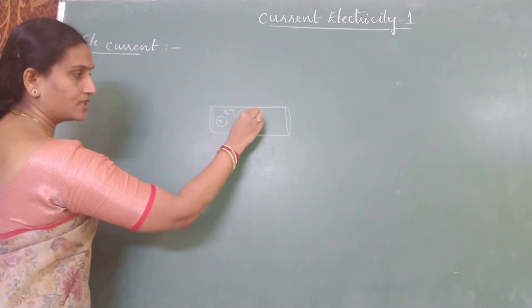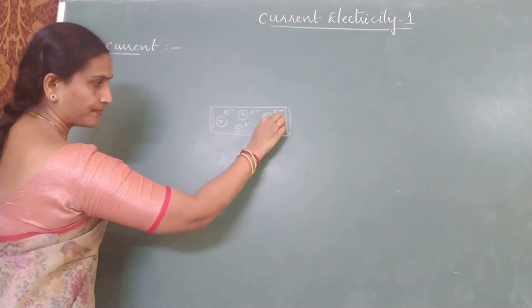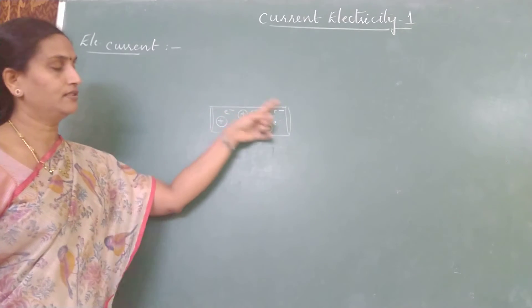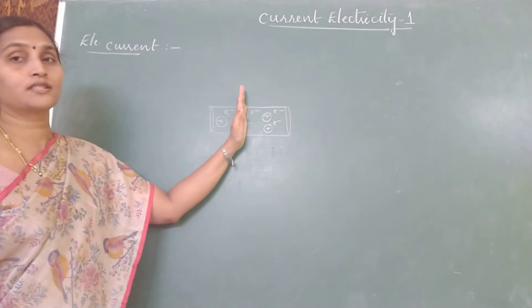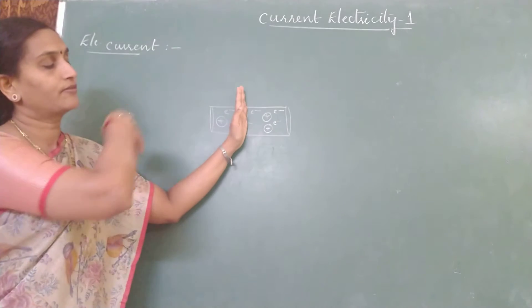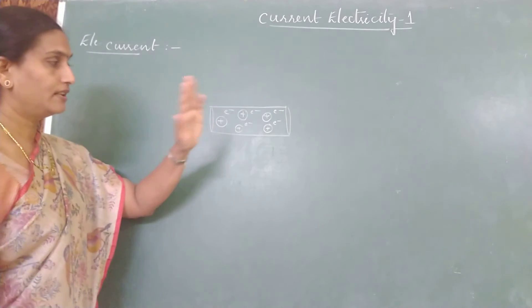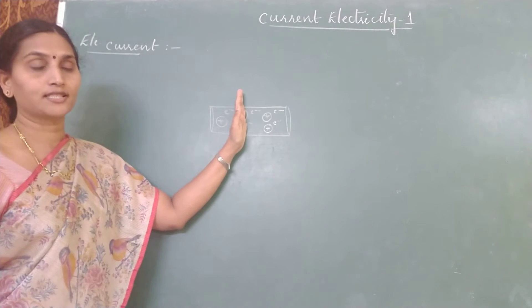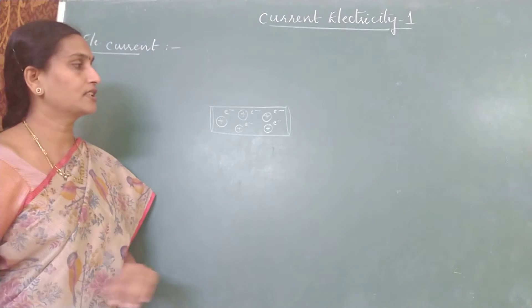We indicate the positive charge with a circle to show that it is immobile, and these are the free electrons which are moving. At room temperature, these electrons are free and they are randomly moving within the conductor. Since they are in random motion, for every electron moving from left to right there would be an electron moving from right to left, and the net transfer of charge across the cross section of the conductor is zero in normal cases. Since there is no net charge transferred, we say there is no current in the conductor.